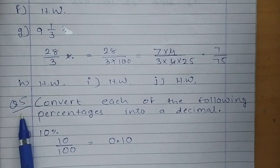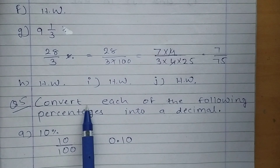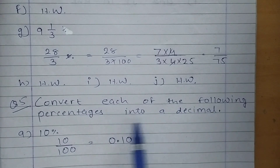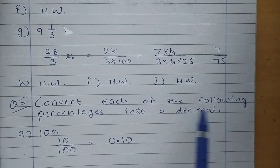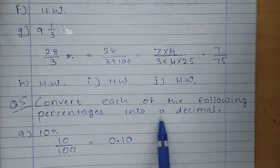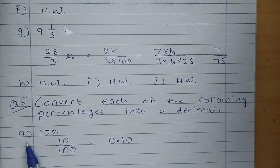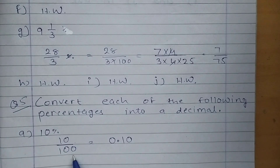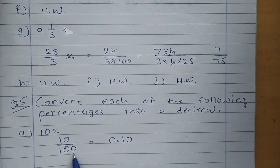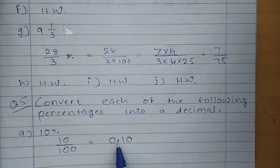Next, Question 5: Convert each of the following percentages into a decimal. So students, again we will divide by 100. Part A: 10 percent. 10 upon 100 — how many zeros are there in 100? 2 zeros. So put the decimal point after 2 digits from the right: 1, 2, point. So the answer is 0.10.